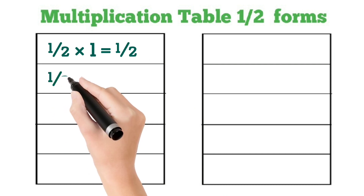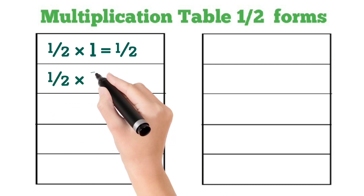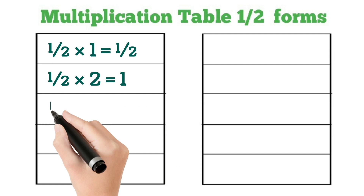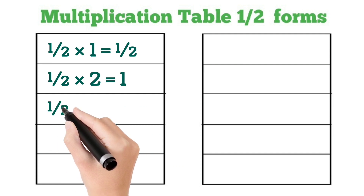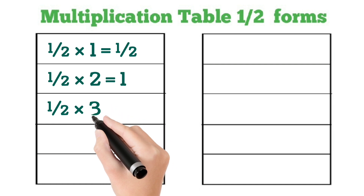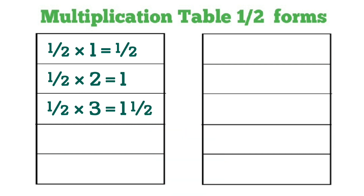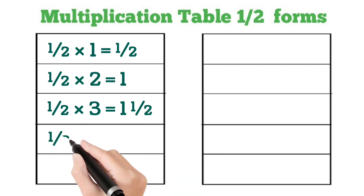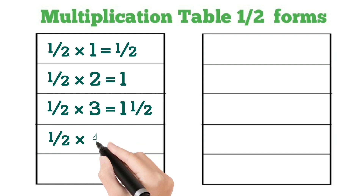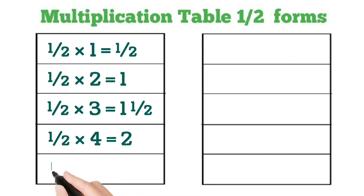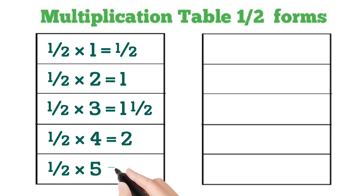1 by 2 multiplied by 2 is equal to 1. 1 by 2 multiplied by 3 is equal to 1 and 1 by 2. 1 by 2 multiplied by 4 is equal to 2. 1 by 2 multiplied by 5 is equal to 2 and 1 by 2.